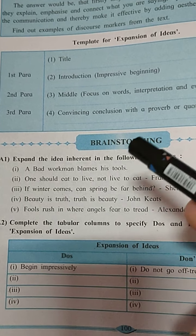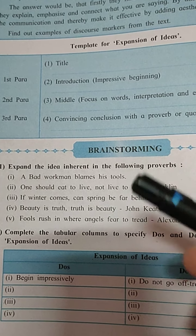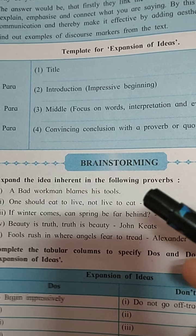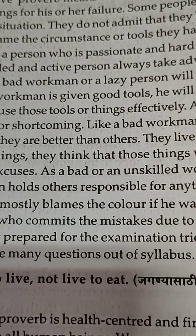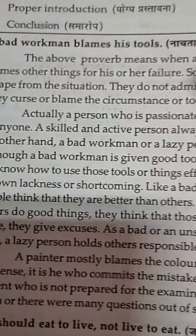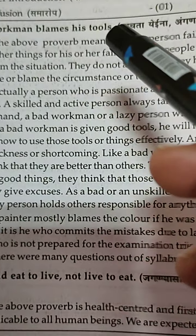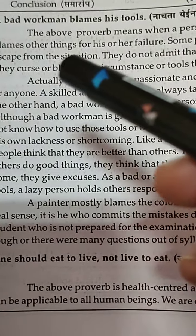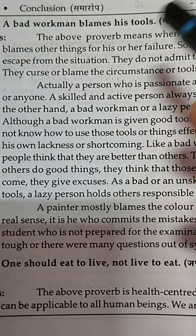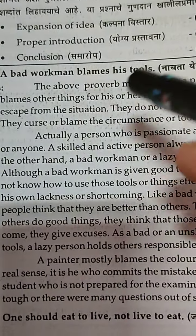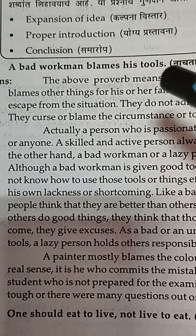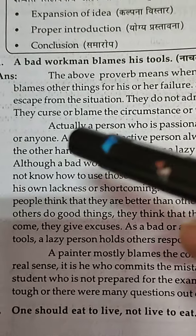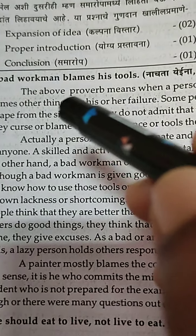The template for expansion of ideas: The title is important. First paragraph — introductory introduction with an impressive beginning. Second — middle, focus on words, interpretations, and evaluation of ideas. Third paragraph — a convincing conclusion with a proverb or quotation. These are the important elements while writing the expansion of ideas.